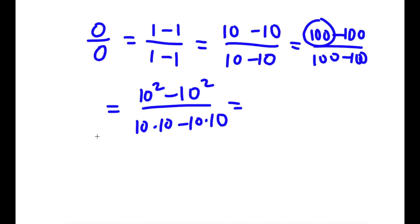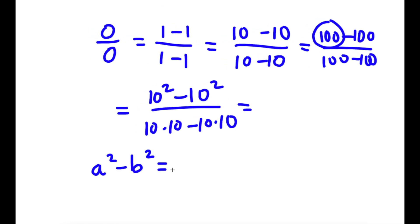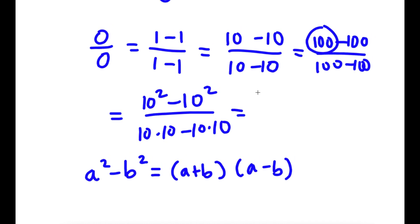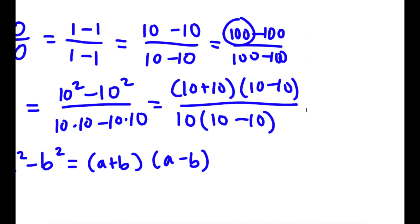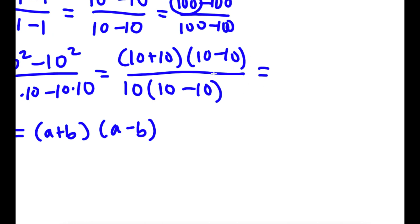If I have something in the form a squared minus b squared, this equals a plus b times a minus b. So 10 squared minus 10 squared equals 10 plus 10 times 10 minus 10. This is completely legal — I'm just using a property of exponents. For the denominator, I'm going to factor out 10, giving me 10 times 10 minus 10.